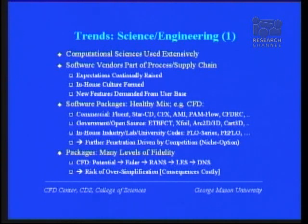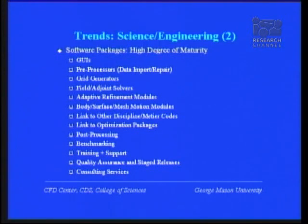We have a healthy mix of packages in all fields — commercial, government, and in-house — with very healthy competition. All these packages have many levels of fidelity and have reached a fairly high degree of maturity. Just by the length of the list of capabilities, you can see that putting together one of these codes, which typically has anywhere from one to five million lines of code, is not such an easy matter.